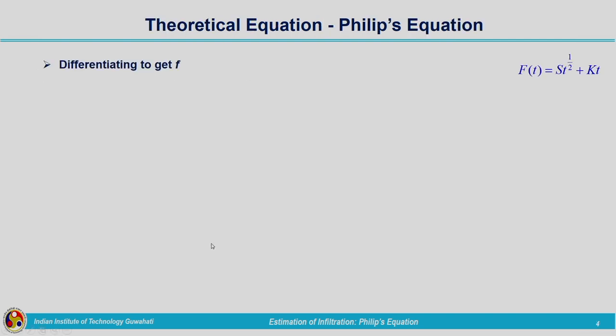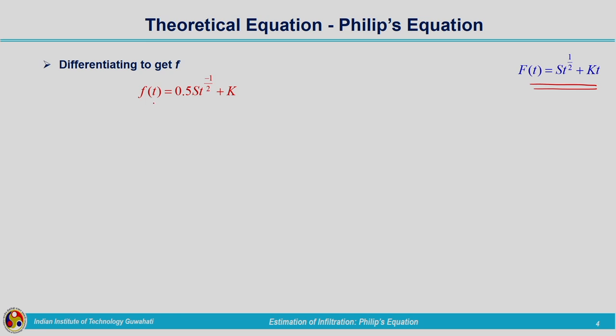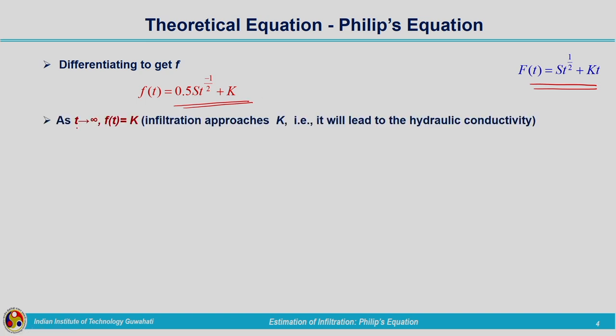This is our cumulative infiltration equation. For determining the infiltration rate we differentiate the cumulative infiltration curve. This particular equation is differentiated and f of t can be obtained as 0.5 S times t to the power of minus half, plus K. As t tends to infinity, t is increasing to a large value; the first term 0.5S divided by root of t will be diminishing, so infiltration rate approaches hydraulic conductivity K.